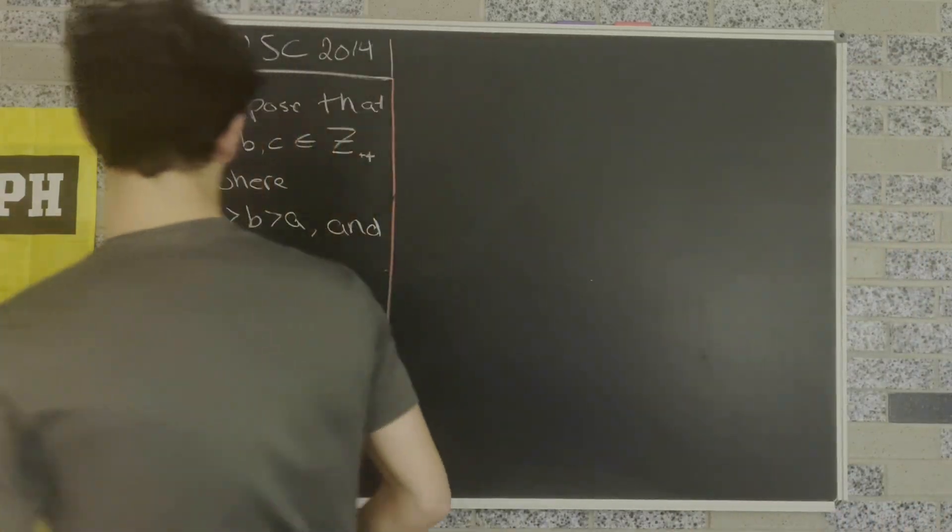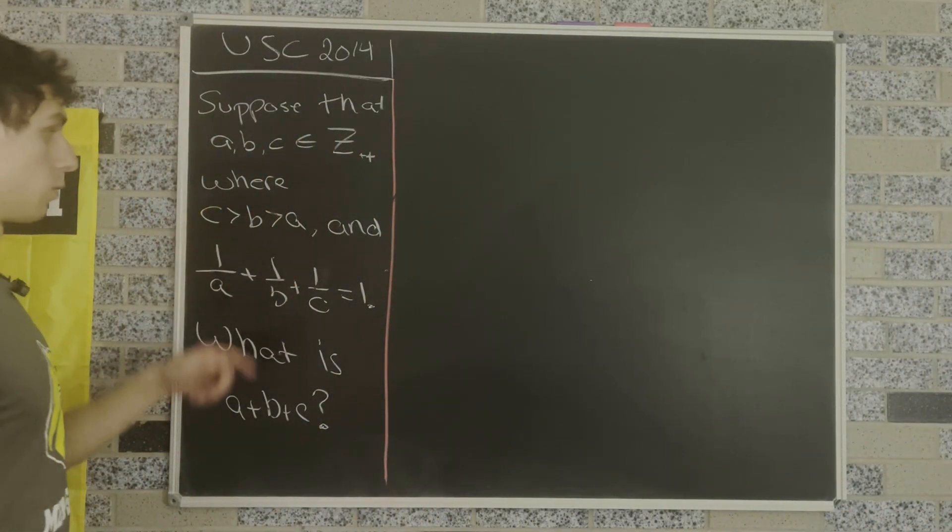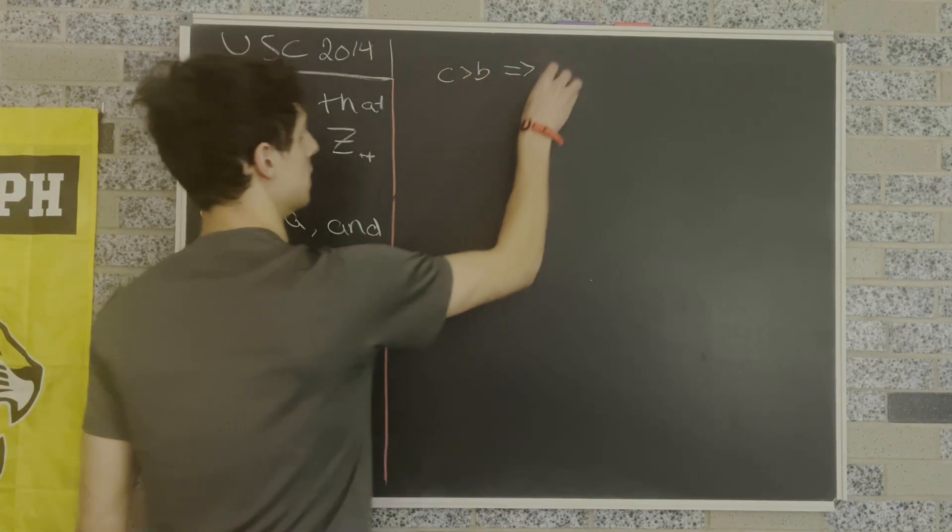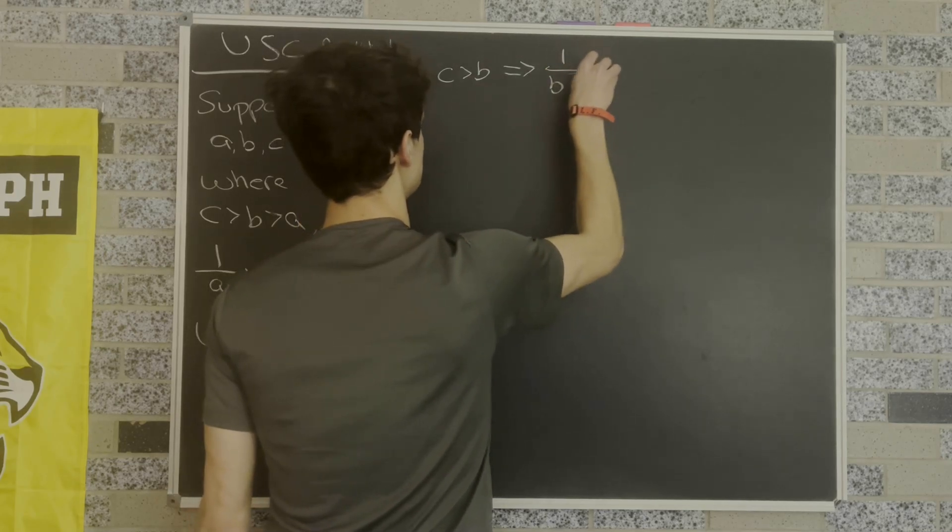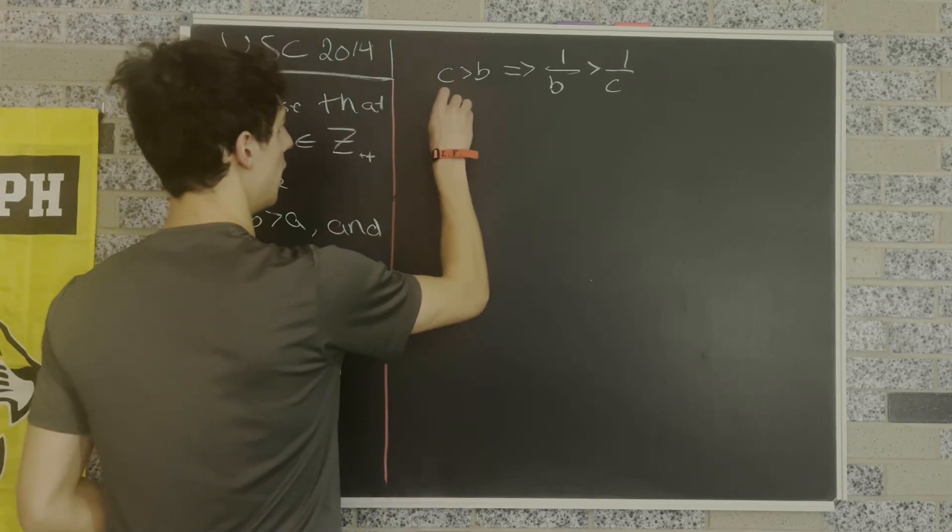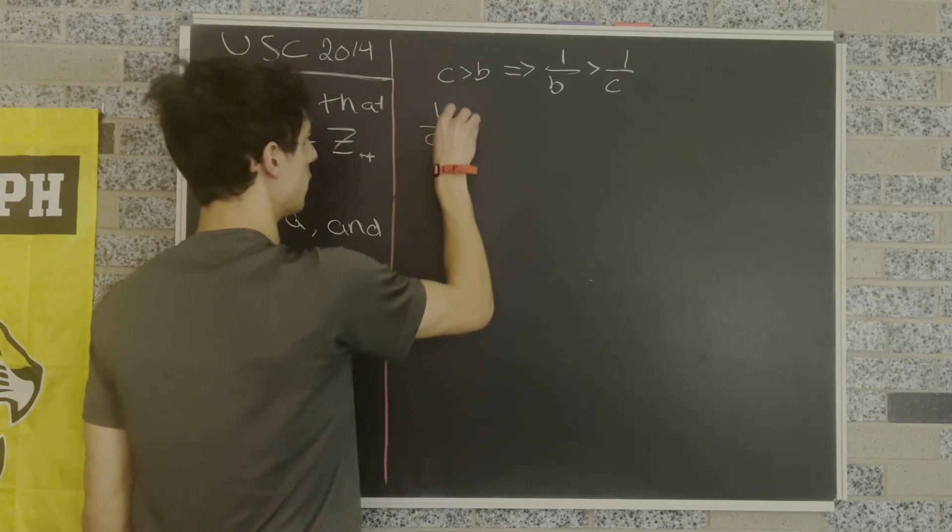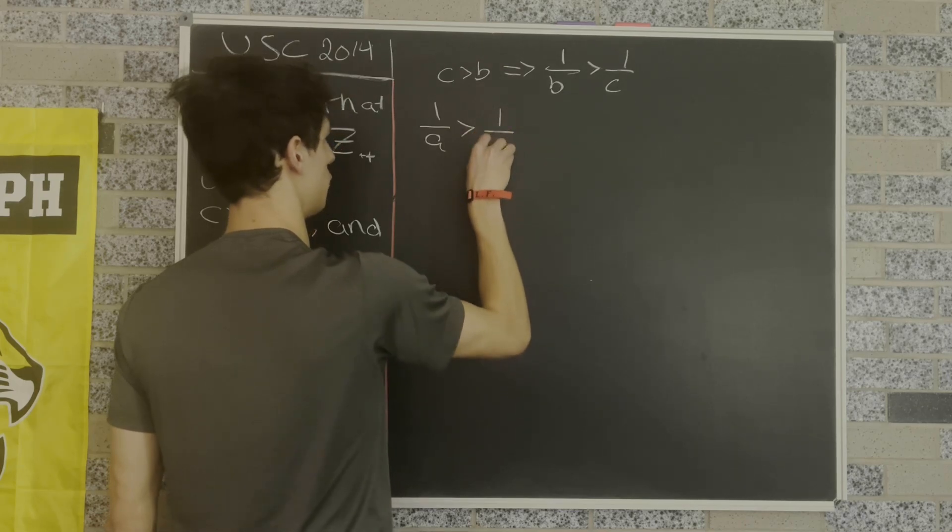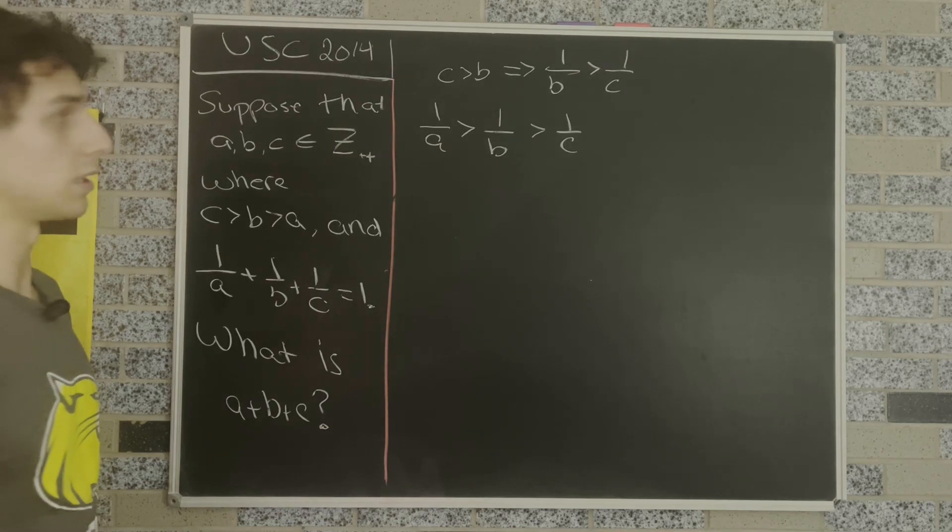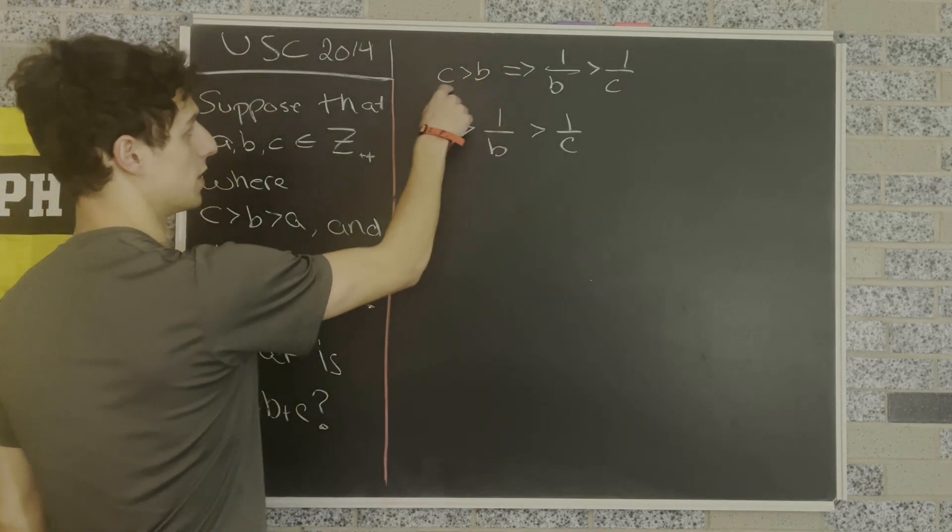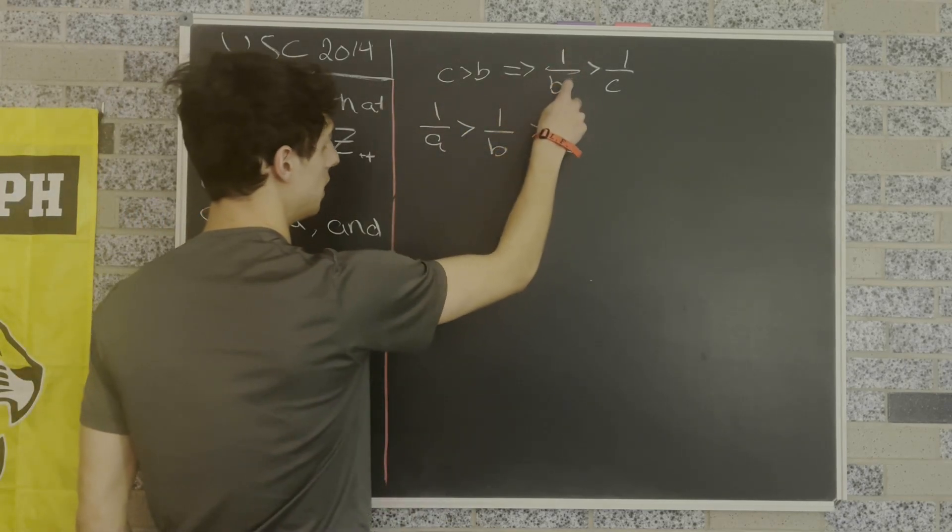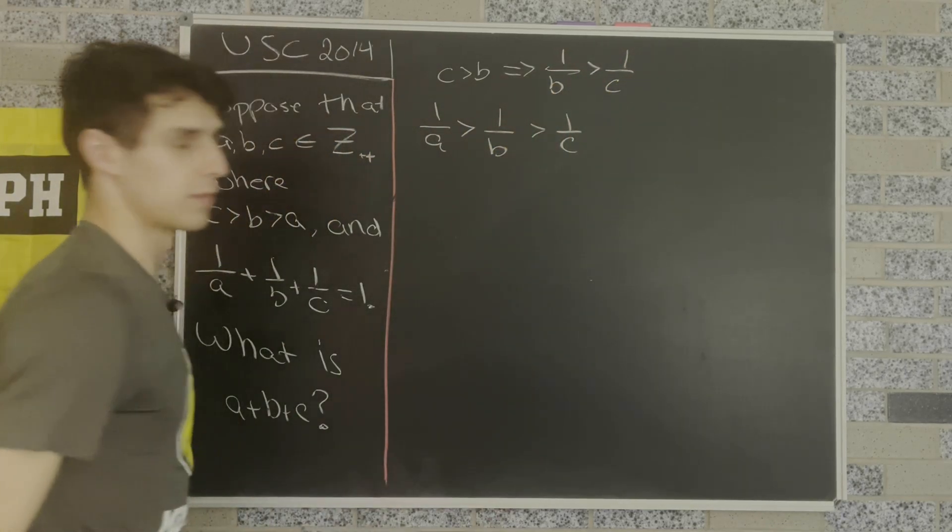Okay, so first I'm going to reorganize this inequality. We know that C is greater than B, but if that's the case, that means 1 over B must be greater than 1 over C. Similarly, 1 over B is less than 1 over A. So we can write that 1 over A is greater than 1 over B which is greater than 1 over C. Basically what we did was divide both sides by B, so C over B is greater than 1, then we divided both sides by C so we got 1 over B is greater than 1 over C, and we did the same thing for A.